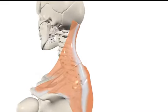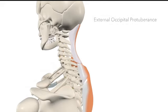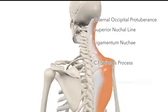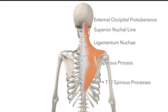The trapezius arises from the external occipital protuberance, the superior nuchal line of the occipital bone, the ligamentum nuchae, the spinous process of the seventh cervical vertebra, and the spinous processes of all of the thoracic vertebrae.